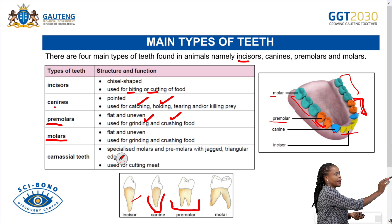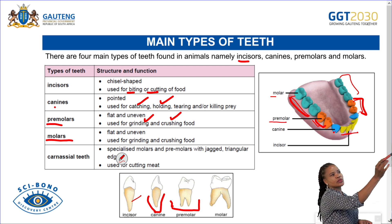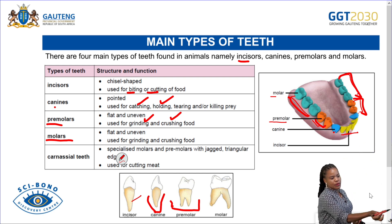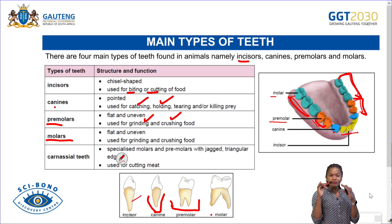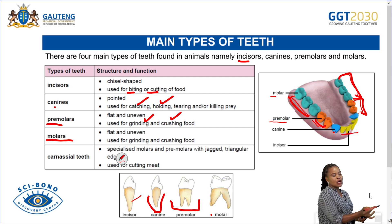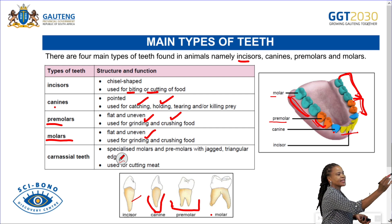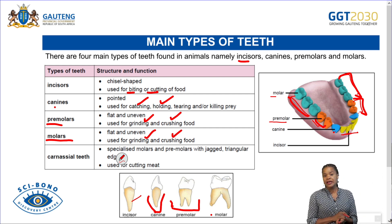The last type are the molars — the green set. The molars are also flat and uneven, almost the same as the premolars. They are also used to grind and crush food.